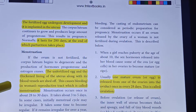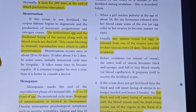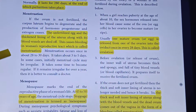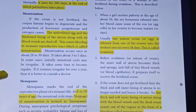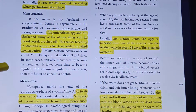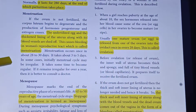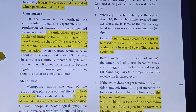Menstruation occurs once in about 28 to 30 days. Some may have cycles of up to 40 days, which can also be normal. It may take a couple of years for the cycle to become regular. If it remains irregular for a prolonged period, it is better to consult a doctor. A length of 45 to 50 days from the normal range warrants a doctor's consultation.